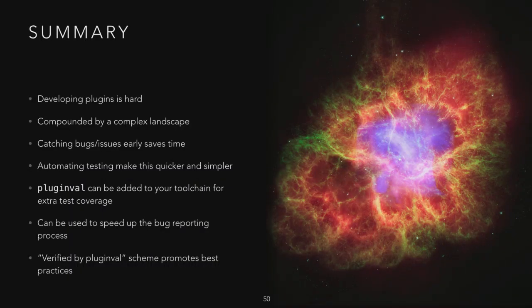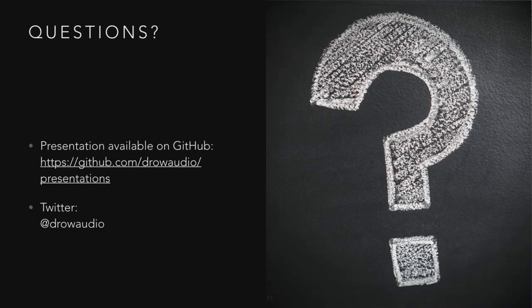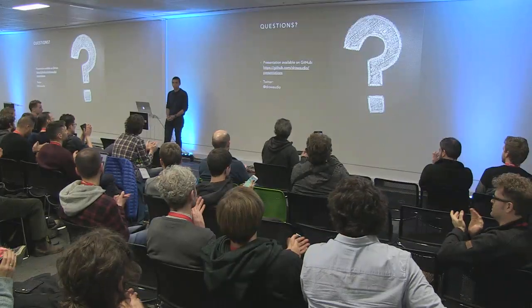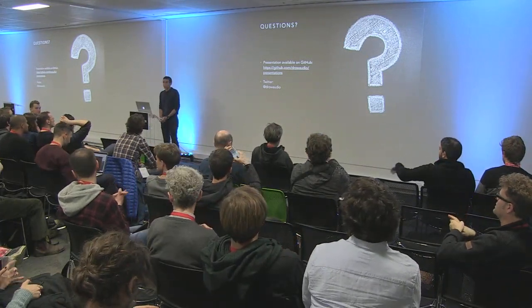In summary: developing plugins is hard, compounded by a complex landscape. Catching bugs and issues early saves time and money. Automating testing makes this quicker, and Plug-in Valve can be added to your toolchain to improve test coverage and speed up bug reporting. The Verified by Plug-in Valve scheme will help promote these best practices. The presentation will be available on GitHub, and you can find me on Twitter at d_row_audio.